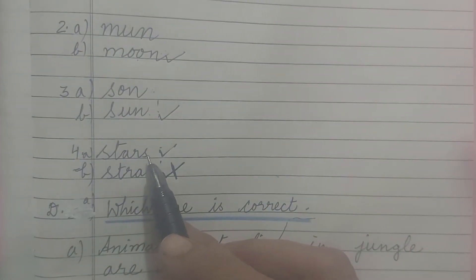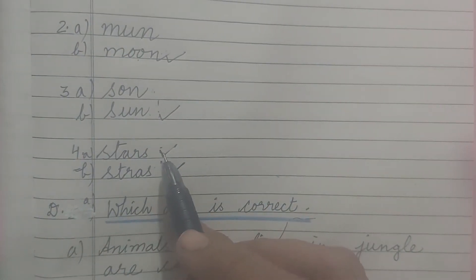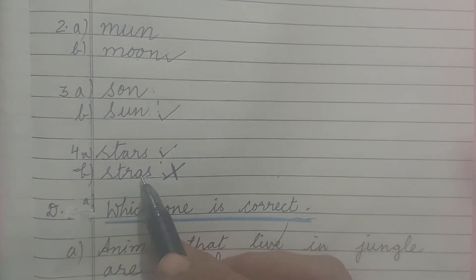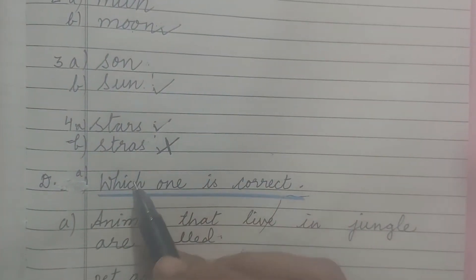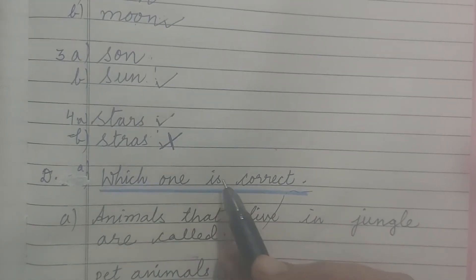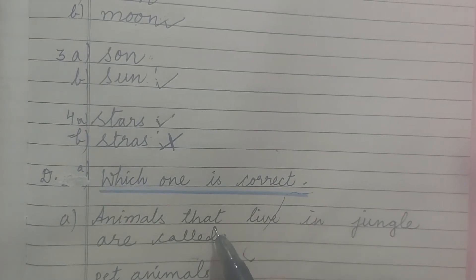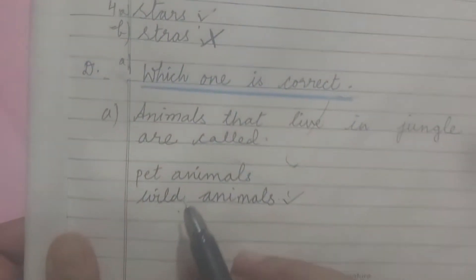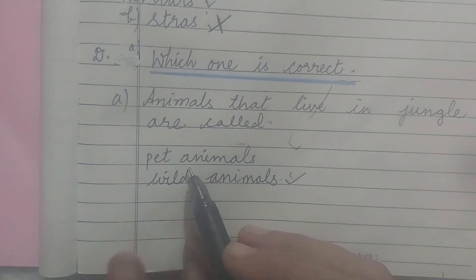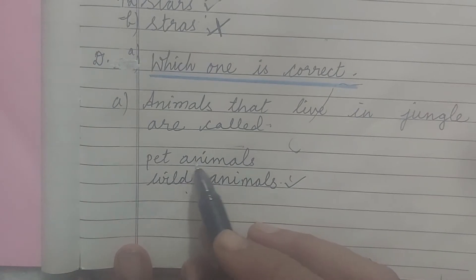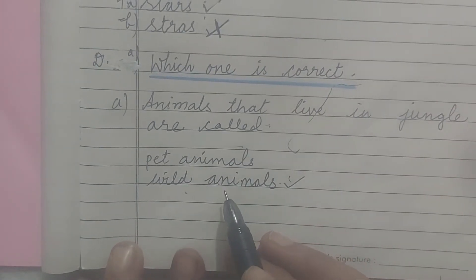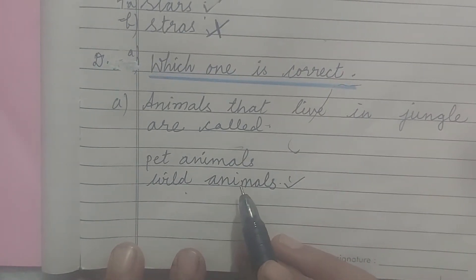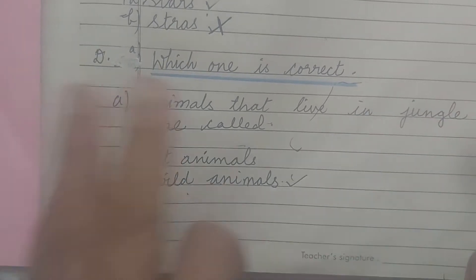For 'Stars': S-T-A-R-S is correct and S-T-R-A-S is wrong. Next question: animals that live in the jungle — they are called wild animals, not pet animals. So click 'wild animals'.